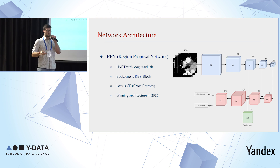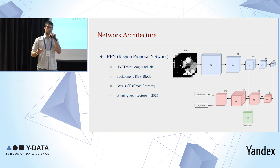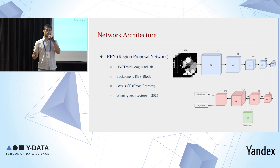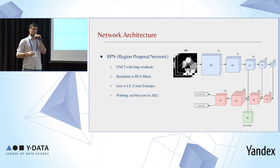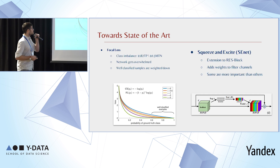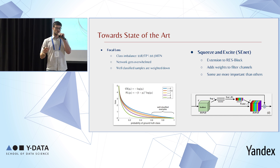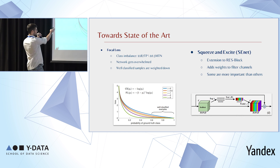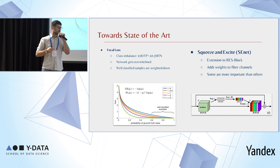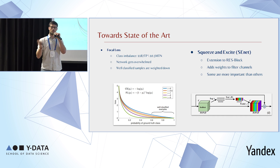We didn't want to use the detector as it was in 2017 — we wanted to improve it and bring it to a more state-of-the-art status. We did a lot of paper reviews and found recent advances, choosing two improvements to incorporate into the detector model. The first improvement was the use of focal loss, which changes the loss function to give less emphasis on examples that are already well classified and more emphasis on examples that are not yet classified well. This helps cope with the highly imbalanced problem that is overwhelming our detector.